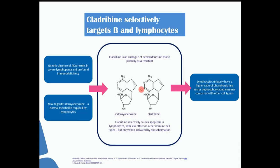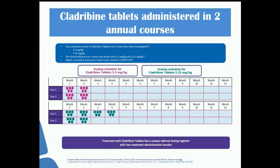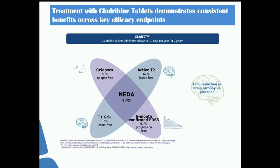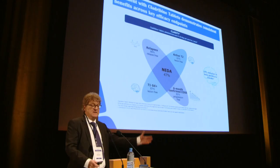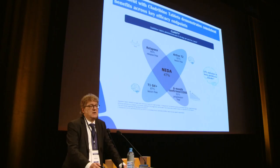Cladribine, an old drug that specifically causes apoptosis of activated T and B lymphocytes, was initially pioneered by Seip and Beutler at the Scripps Clinic in parenteral form and later studied as a tablet. Short annual courses provided significant clinical benefit — both clinically and on MRI, with NEDA achieved in 16% versus placebo in a placebo-controlled trial.